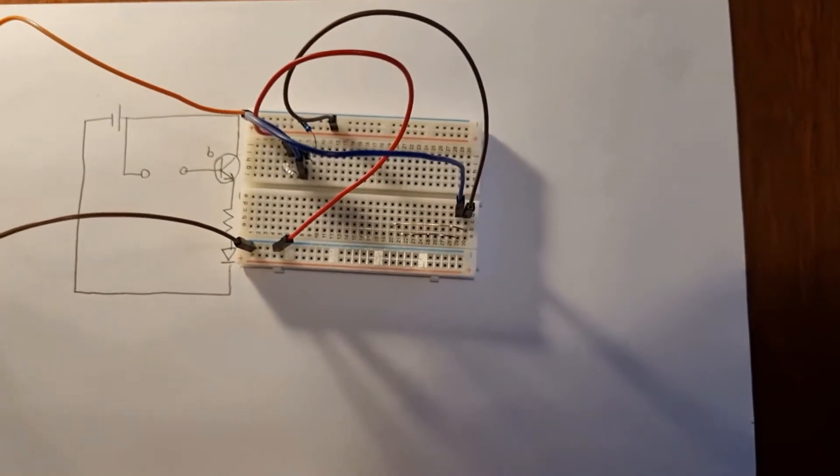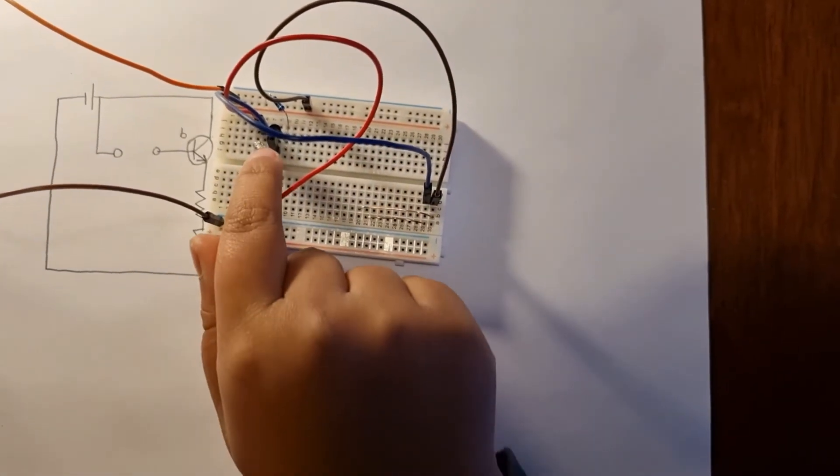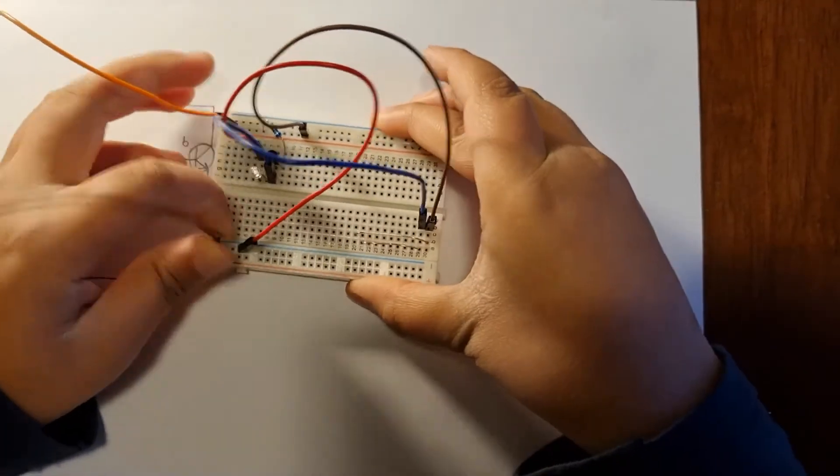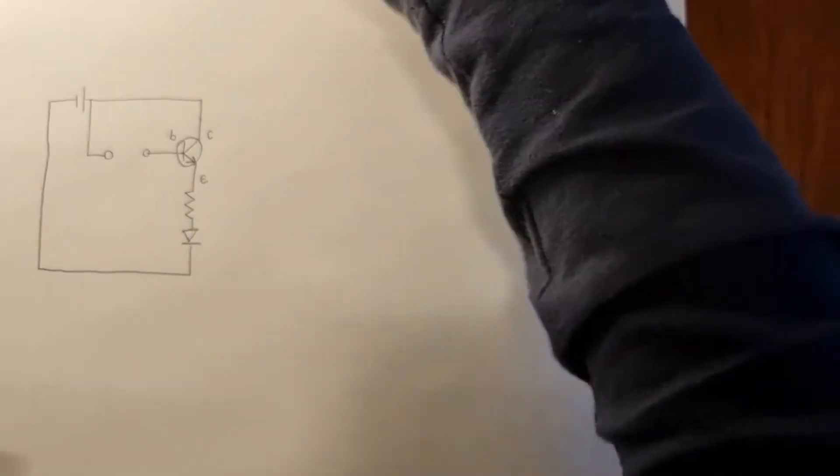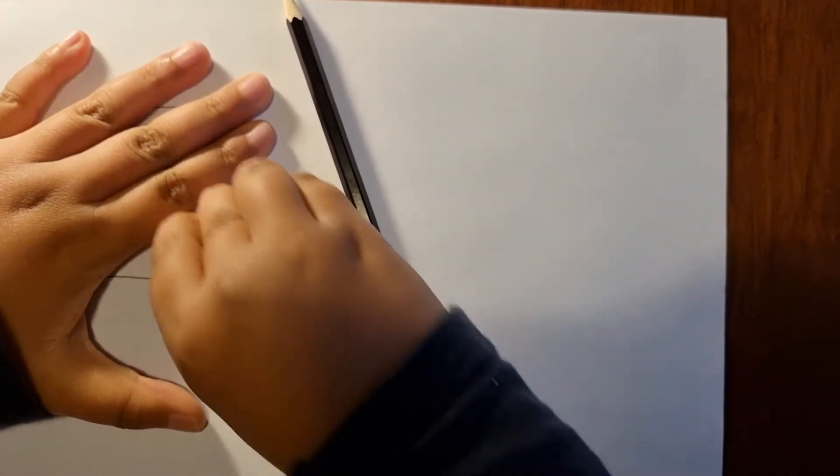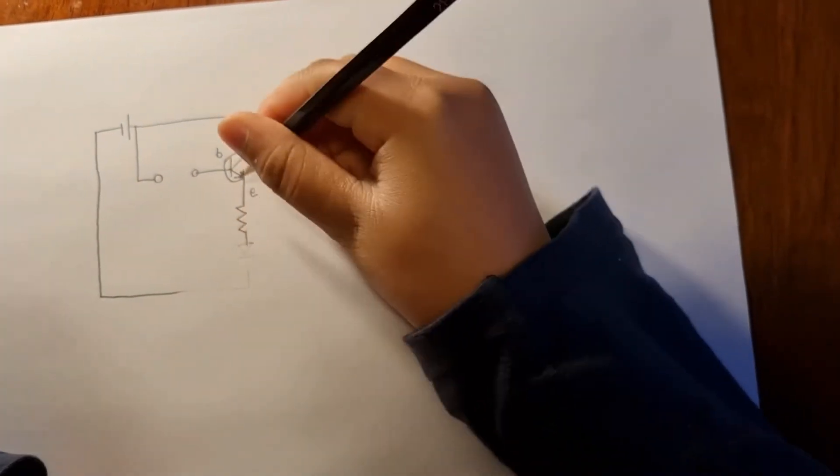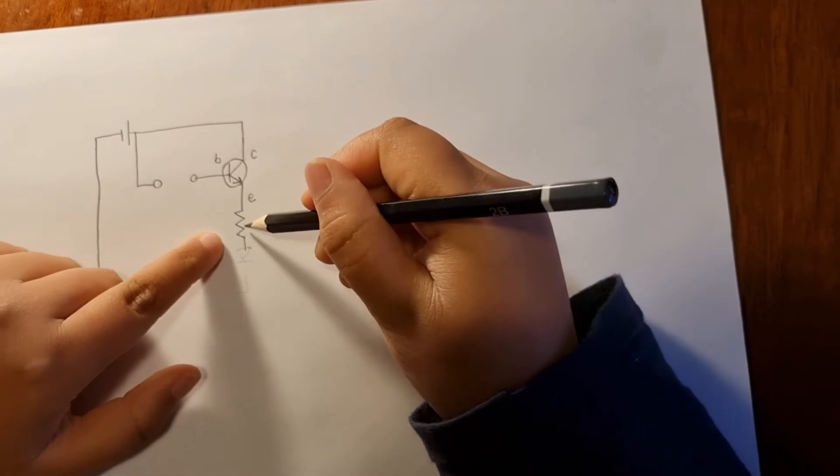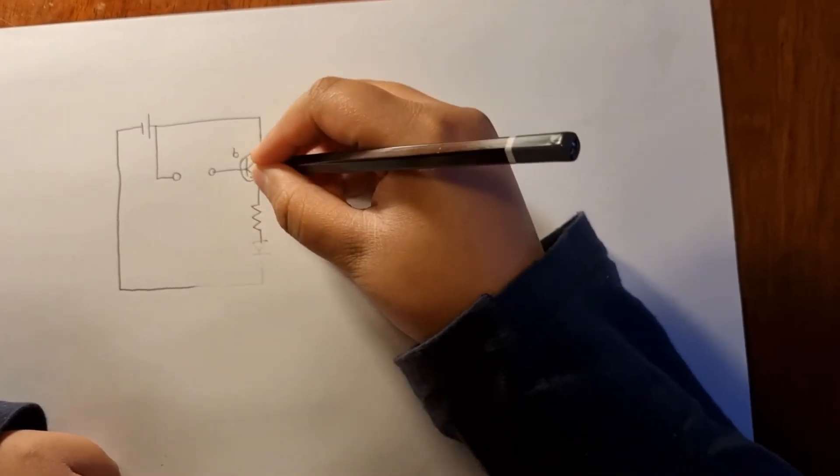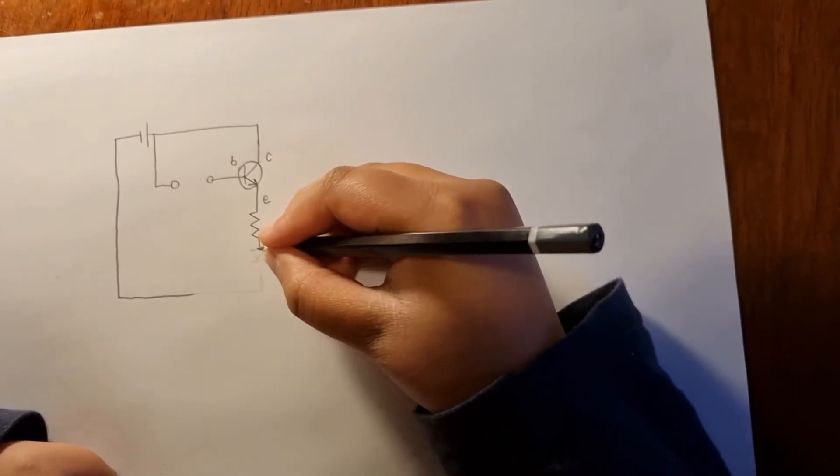But what if I wanted to make a circuit that continuously made the LED light up as bright as it can be? To do that, I can, instead of putting an LED here, I can put another transistor, and I have to make this resistor bigger than it was before because this time I'm putting the current from the emitter into another transistor.